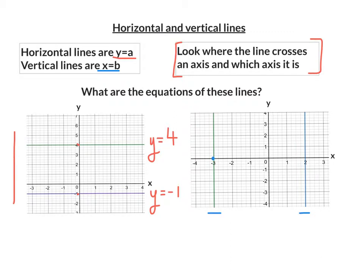crosses the x axis at negative 3. So that equation is x equals negative 3. And the blue line crosses at the x axis at 2. So it's x equals 2.